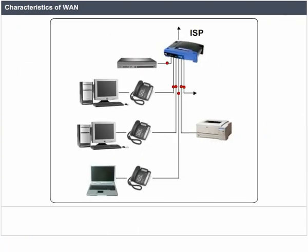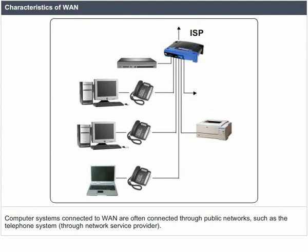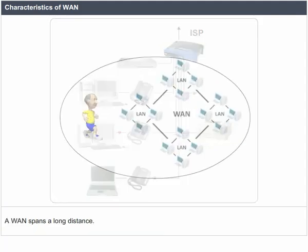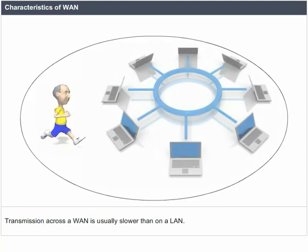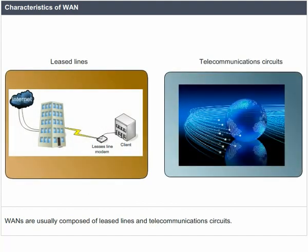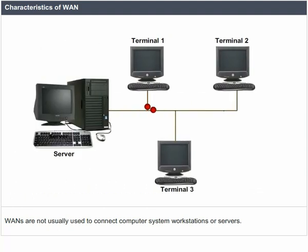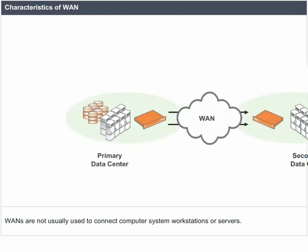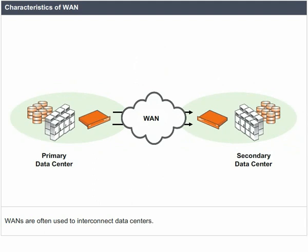Characteristics of WAN. Computers connected to a WAN are often connected through public networks such as the telephone system via a network service provider. A WAN spans a long distance. Transmission across a WAN is usually slower than on a LAN. WANs rarely use broadcast or multi-access technologies. WANs are usually composed of leased lines and direct communication circuits. WANs are not usually used to connect workstations or servers, but are often used to interconnect data centers.